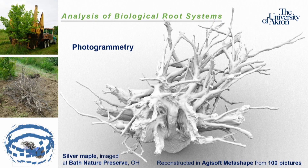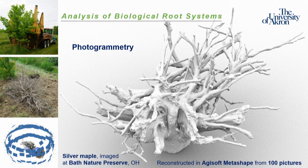This shows a silver maple root wad that was pulled out, which is why it looks so asymmetrical. We had to remove fine roots by hand with garden shears because when creating the 3D model, fine roots are too fine — they create bulges or artifacts in the model. So we're really looking at that coarse root morphology.